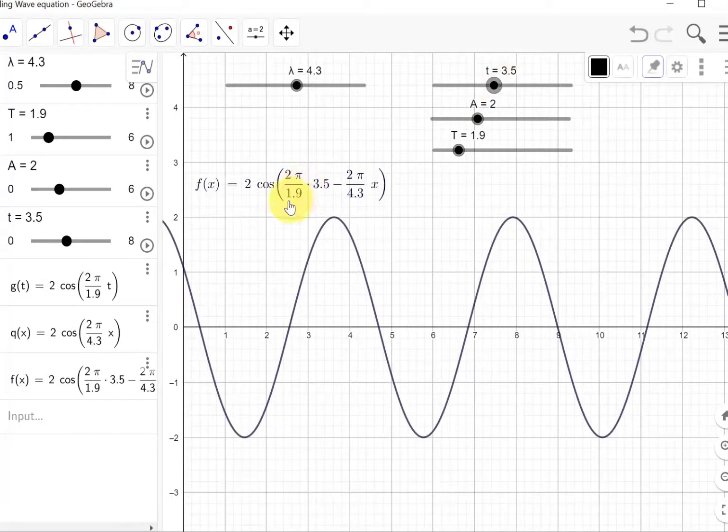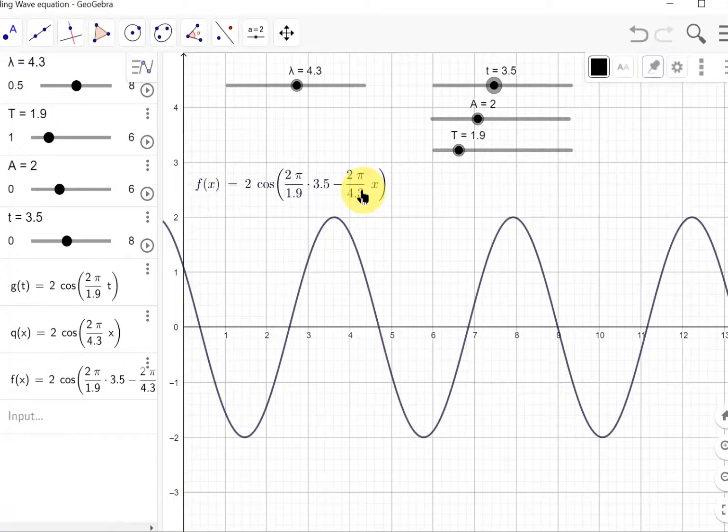Now when I increase time from zero, it's going to move to the right. So this equation has wavelength in it, time period in it, and one over time period is frequency. That means it has information about both frequency and wavelength. Since the product of frequency and wavelength is speed, you can find the speed of this wave by using the period information and wavelength information found in this equation.